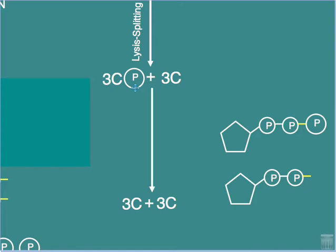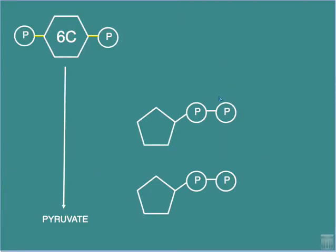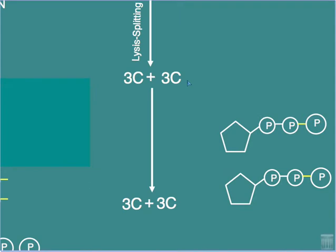The molecule ADP is once again converted into the energy-rich ATP. At this point there is no net gain of ATP — two molecules were used to energize the glucose molecule, and now the three-carbon phosphorylated structures produced by lysis have each released their phosphates, so there is no overall change in the amount of ATP consumed.